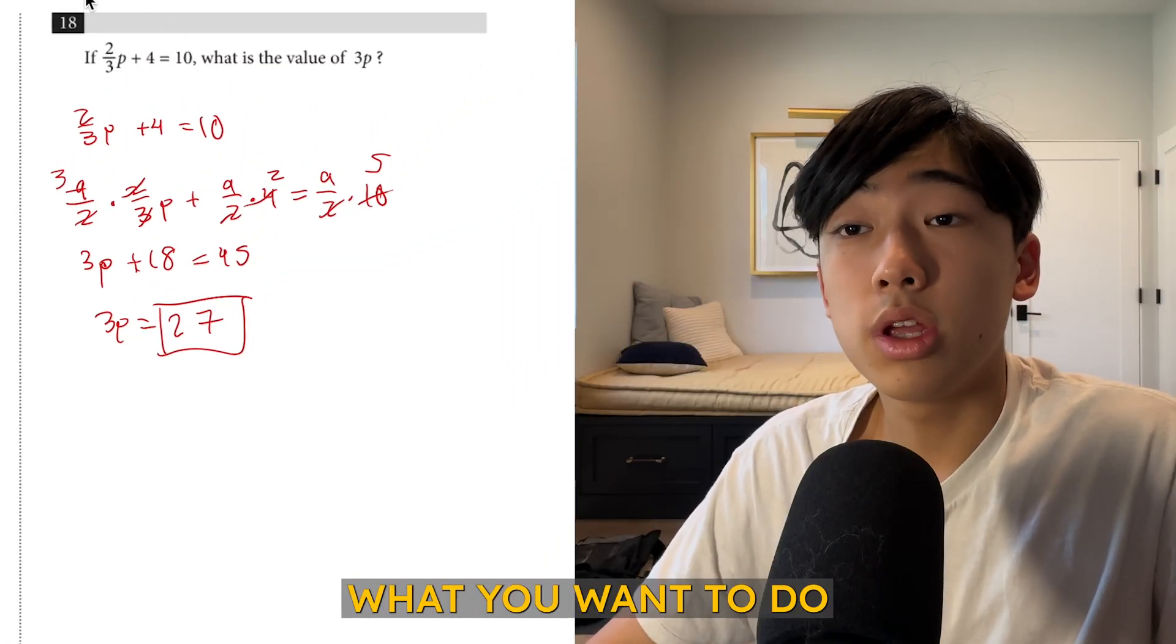Now number 18. This one, I also took a little bit of a longer time. What you want to do is, instead of solving for p, you just want to convert 2 over 3p into 3p. And what you can do is multiply every term by 9 over 2, which is what I did. But before that, you could simplify it by saying 2 over 3p is equal to 6. Just subtract 4 on both sides, and then multiply by 9 over 2. So it would be 6 times 9 over 2, or 27.